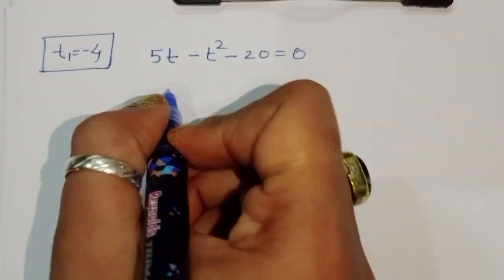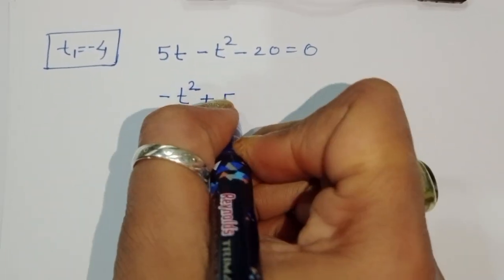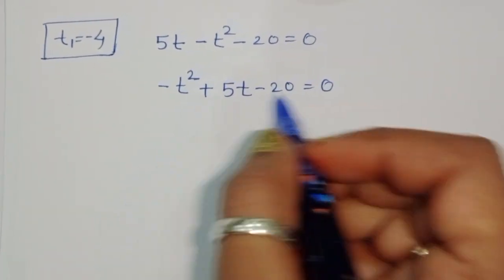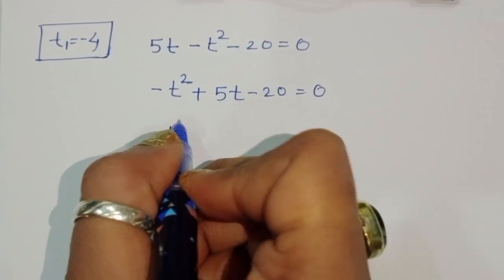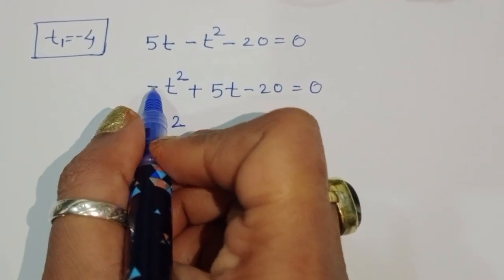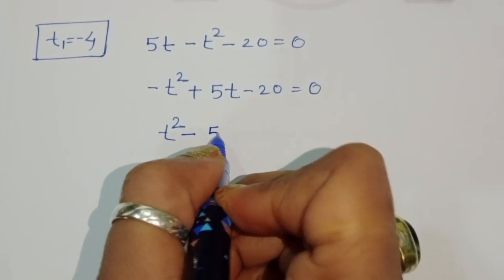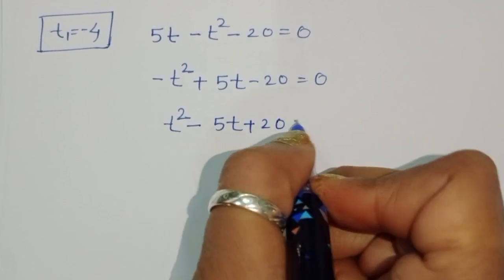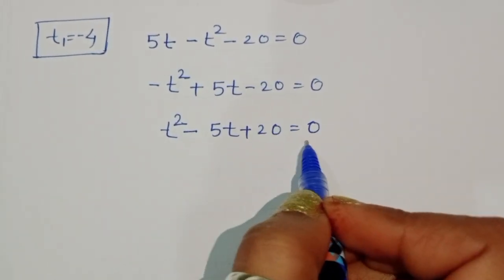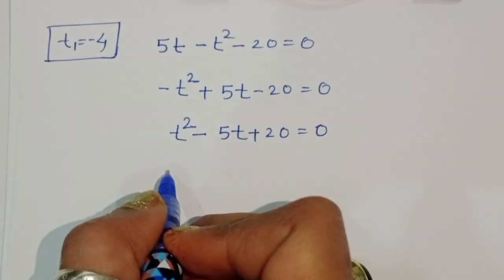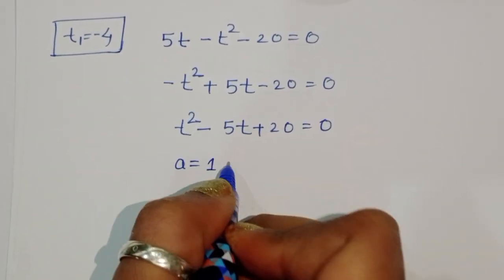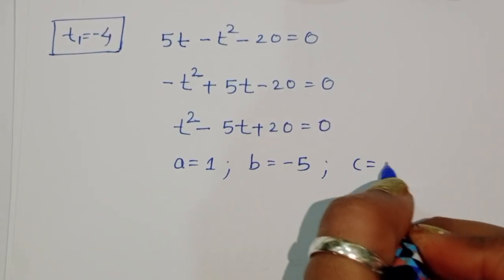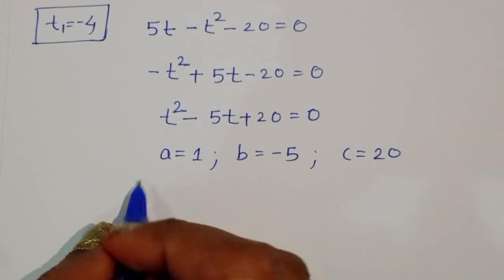We can rewrite the second equation as minus t squared plus 5t minus 20 equals 0. Multiplying through by minus 1 gives t squared minus 5t plus 20 equals 0. Here the coefficients are: a equals 1, b equals minus 5, and c equals 20.